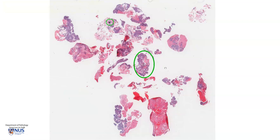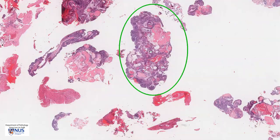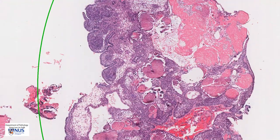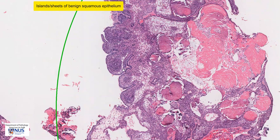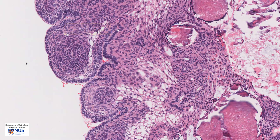At low magnification, we can actually see that there are some pink areas and some bluer areas. These bluer areas represent large islands of stratified squamous epithelium. You'll notice that at the edge of these islands, the nuclei tend to line up in a very orderly fashion. This is known as nuclear palisading — it's almost like they're all standing to attention. So there is peripheral nuclear palisading.